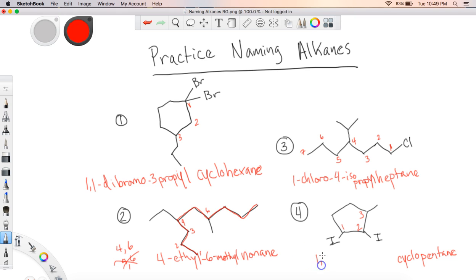So in this case, I'm going to have a 1,2—I need to include the di because I have two of the same, so it would be diiodo and then 3-methyl cyclopentane. And that would be the correct name for that structure.